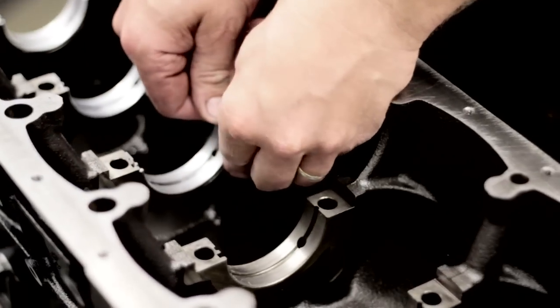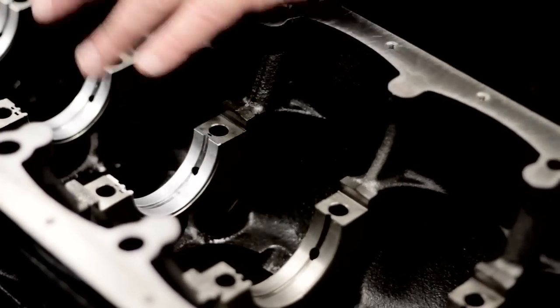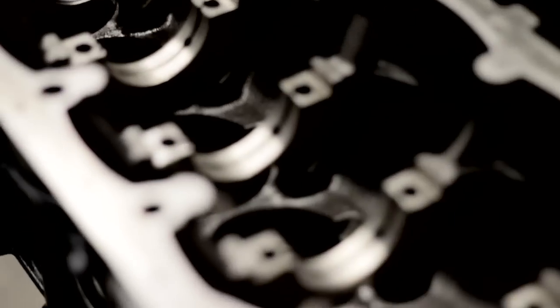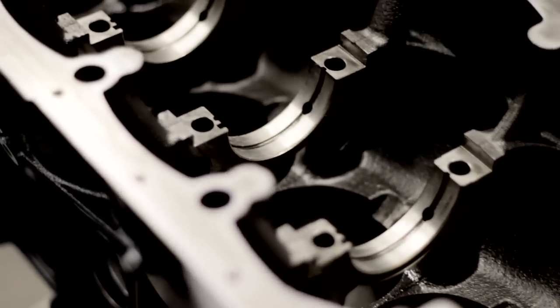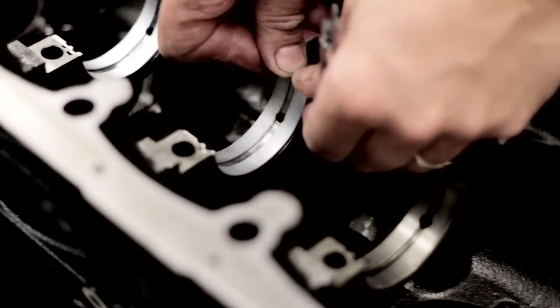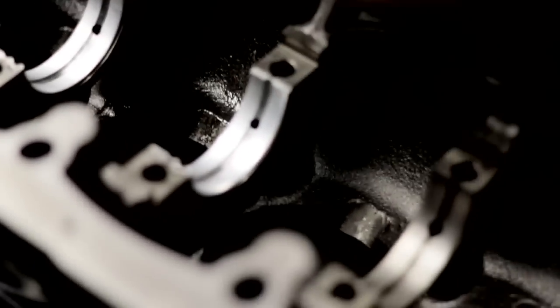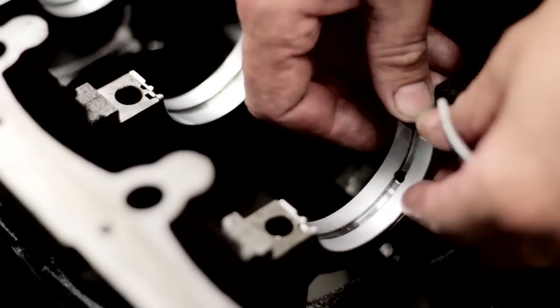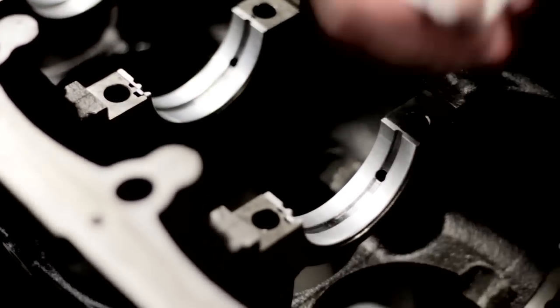Okay, so now we're setting in the main bearings. We're running greens across all six and this front one's a white bearing. Why are you running a white bearing in the front? I'm noticing the crankshafts on them are running the timing chain up front, so I got a little bit of wear on the crankshaft. So I'm tightening up that main clearance on the front main. The white bearing is tighter than the green one. Correct, yes. It's about two tenths tighter.